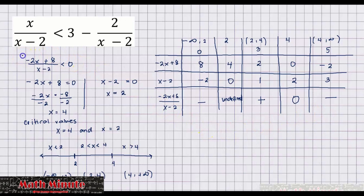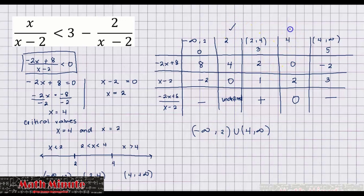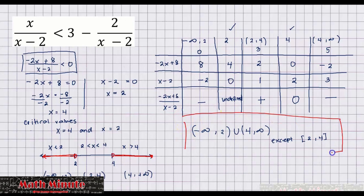Since negative 2x plus 8 all over x minus 2 is less than 0, meaning negative, the solution set is negative infinity to 2, union 4 to positive infinity. We exclude 2 because it's undefined and exclude 4 because we got 0. On the graph, we use hollow circles at 2 and 4 since they are not included, with arrows going to negative infinity from 2 and from 4 to positive infinity.